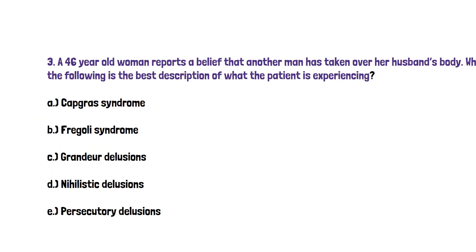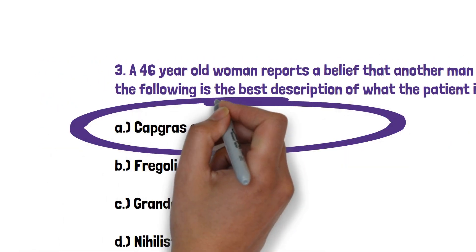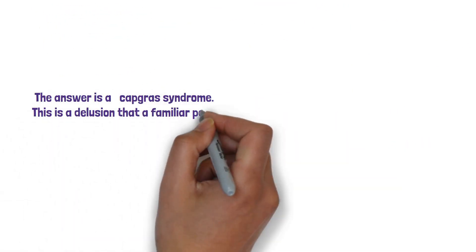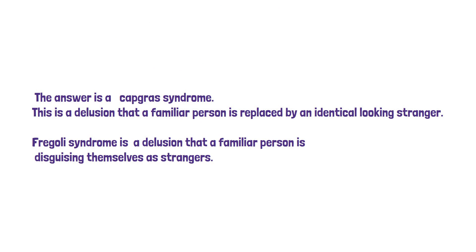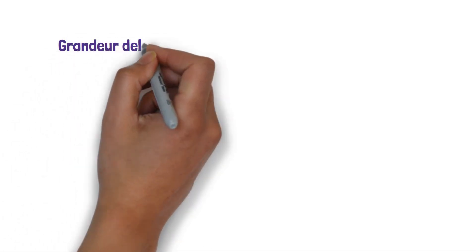So here the answer is A, Capgras syndrome. And this is a delusion that a familiar person is replaced by an identical looking stranger. In this case this woman's husband has been replaced by someone else. Fregoli syndrome is a delusion that a familiar person is disguising themselves as strangers. So you may see your husband in members of the public when you're out walking in the street. That would be Fregoli syndrome.